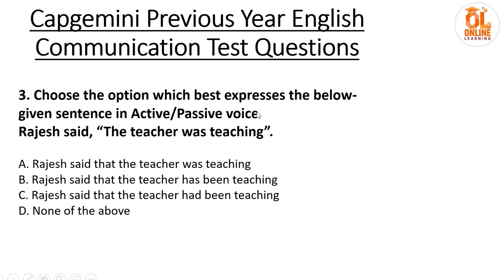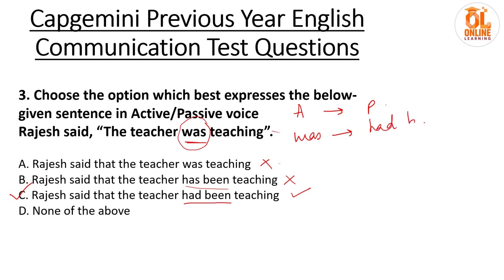Choose the option which best expresses the given sentence in active or passive voice. The sentence is: 'Rajesh said the teacher was teaching.' The keyword here is 'was,' which helps us solve the question. 'Rajesh said that the teacher was teaching' is completely wrong, because when converting between active and passive, the tenses will change. 'Rajesh said that the teacher has been teaching' is also wrong — that would be present tense. The correct answer is option C: 'Rajesh said that the teacher had been teaching,' because 'was' in past tense converts to 'had been.'